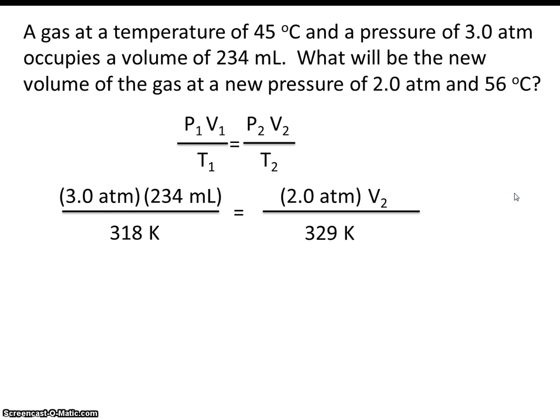And now, we just simply have to crunch the numbers. So this number has 2 sig figs, 3 sig figs, 3 sig figs, 2 sig figs, 3 sig figs. So the fact that the pressures only have 2 sig figs limits our answer to a number with 2 sig figs. So our final answer should be 360 milliliters. This is 2 sig figs.